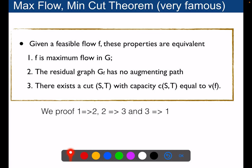We can say that the flow F is maximum in G. We can say that the residual graph GF, corresponding to the flow F, has no augmenting path. Or we can say equivalently that there exists a cut ST with capacity C(ST) equal to the value of the flow.